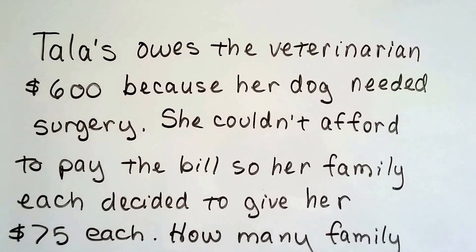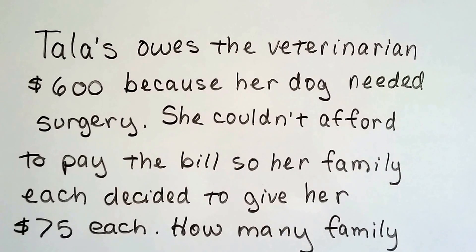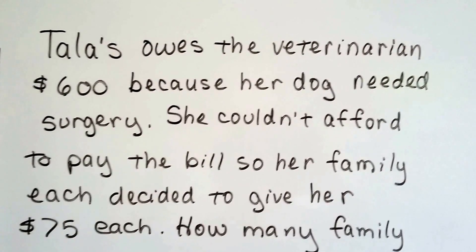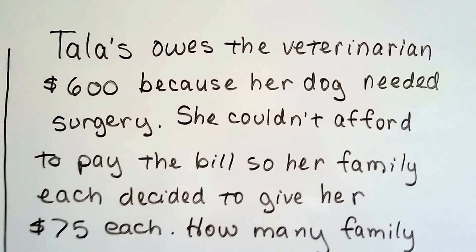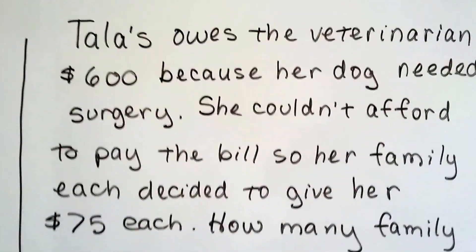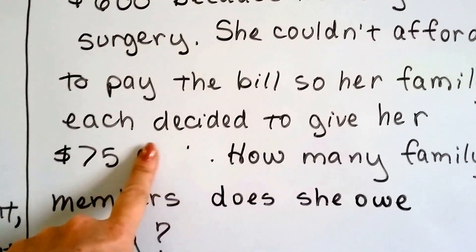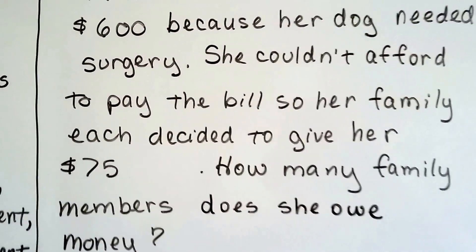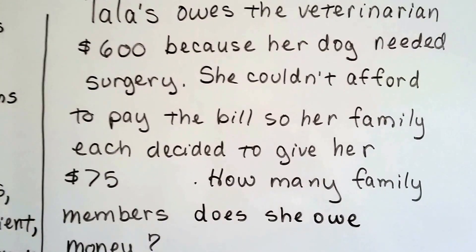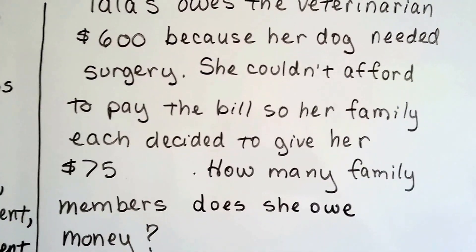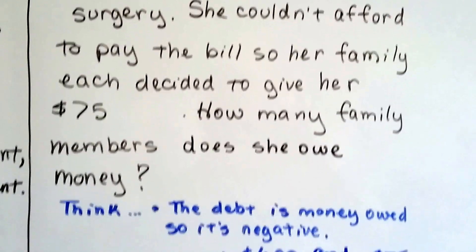Alright, so take a look at this. Tala owes the veterinarian $600 because her dog needed surgery. She couldn't afford to pay the bill, so her family each decided to give her $75. I didn't need to put each again, did I? So her family each gave her $75, each member of her family. So how many family members does she owe money to?